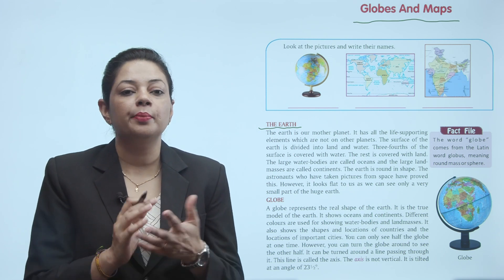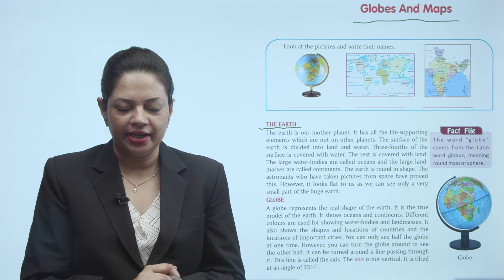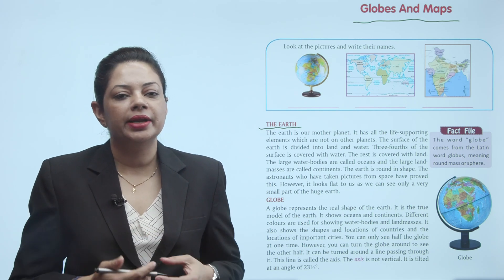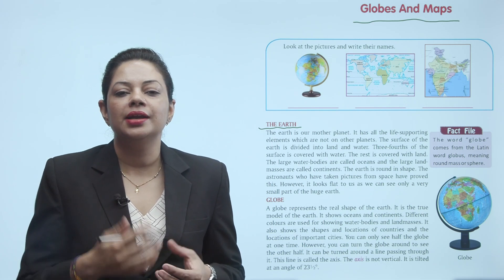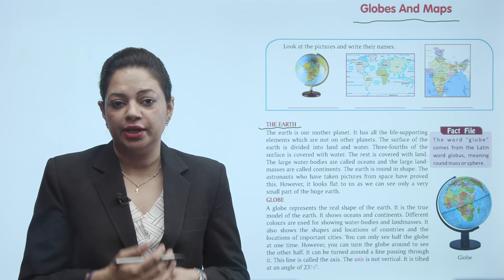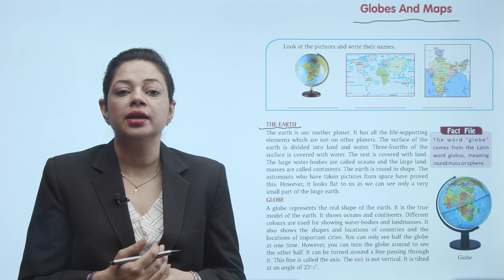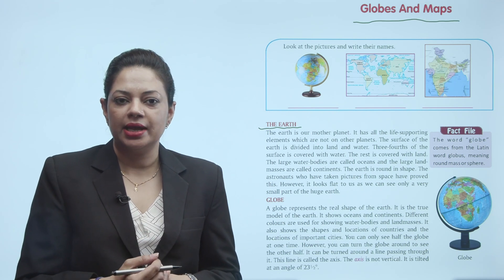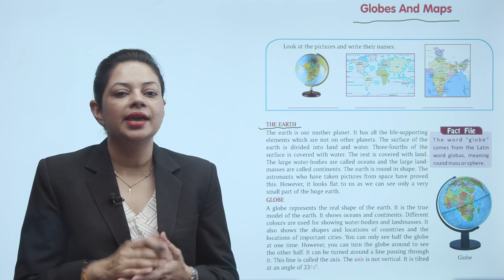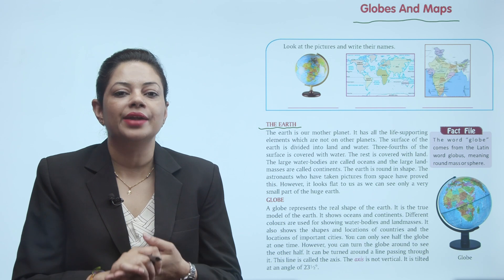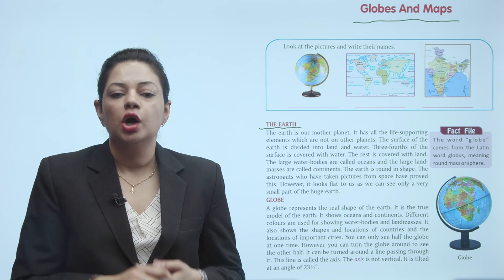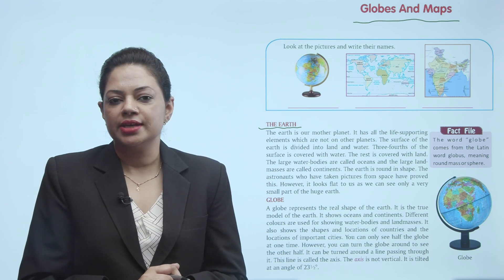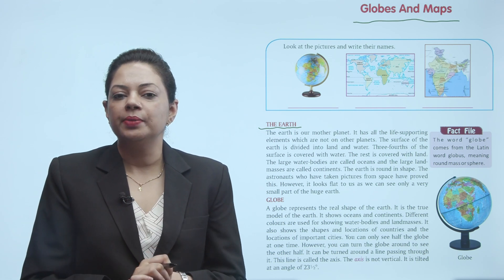Earth humara mother planet hai kyunki Earth hi ek aisa planet hai jahan par life-supporting elements available hain, jaise ki air, water, atmosphere. Earth ki surface do parts mein divide ki gayi hai — land aur water.